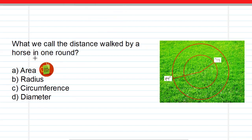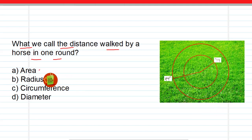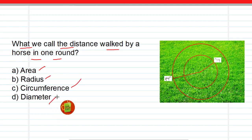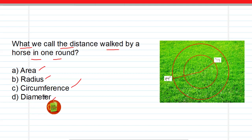The next question is: what do we call the distance walked by a horse in one complete round? Do we call it area, radius, circumference, or diameter? Use the comment box and give your answer — whether option A (area), B (radius), C (circumference), or D (diameter) is correct. Let us know the correct answer through the comment box.